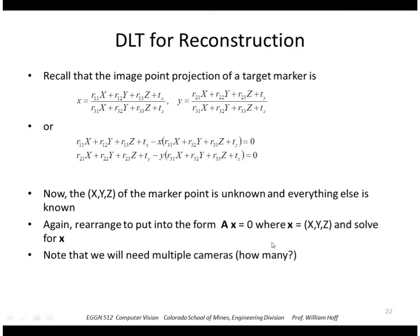We will need multiple cameras to solve for a point. How many? Well, one camera observing a point has two equations. We actually have three unknowns, so we need at least three equations. So we need at least two cameras. And that would give us four equations like this. Of course, more would be better.